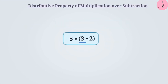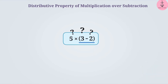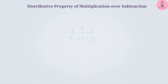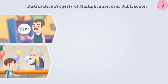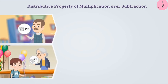Can multiplication also be distributed over subtraction? Let's understand this. Suppose your father gives you 3 rupees every day and you spend 2 rupees of it every day. What is the amount you would save in 5 days?